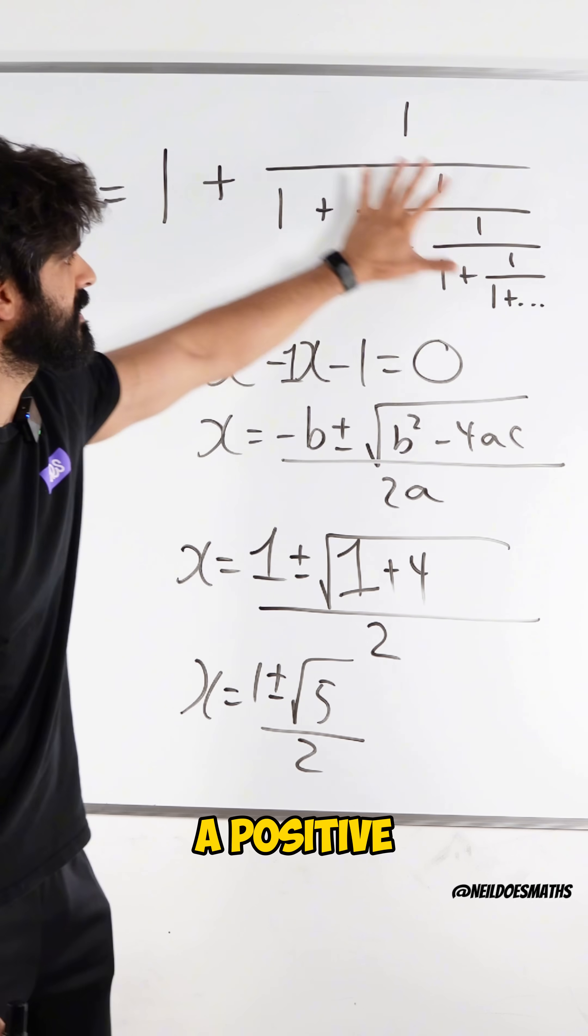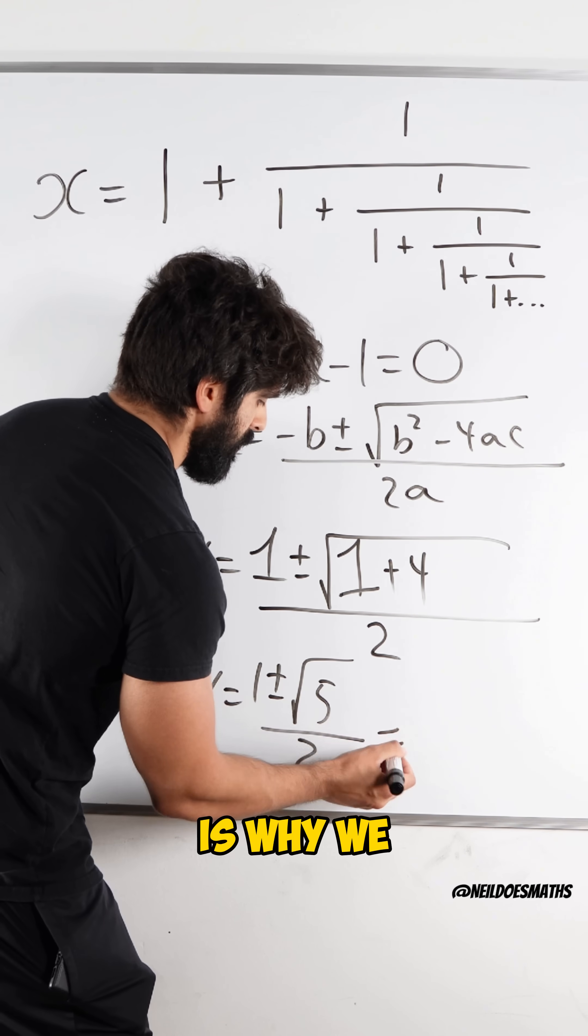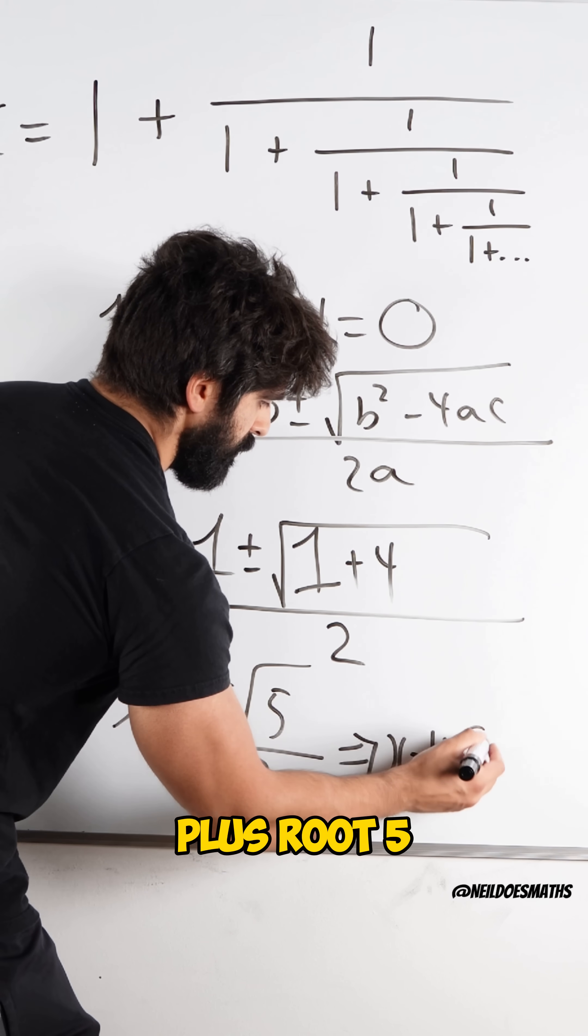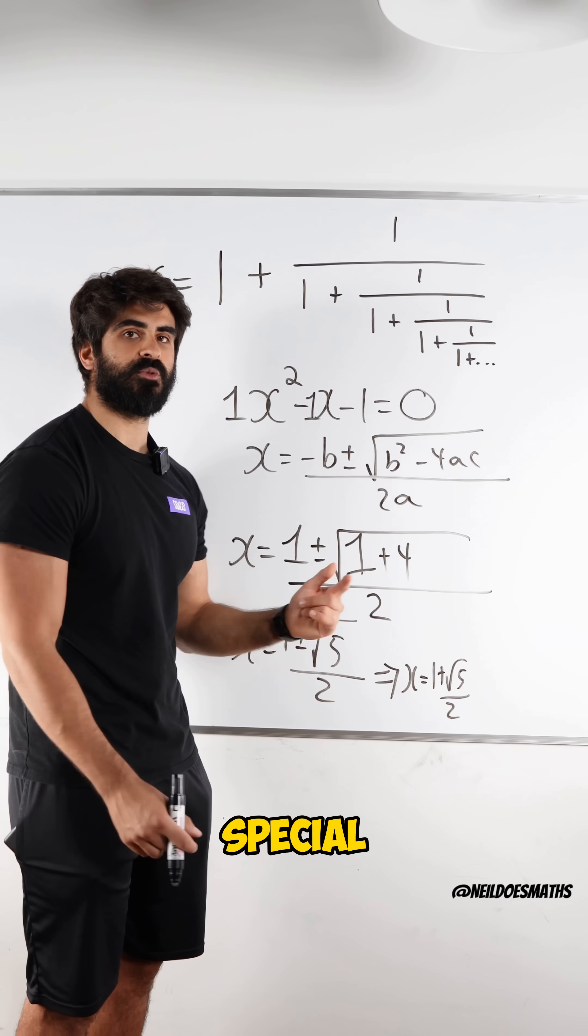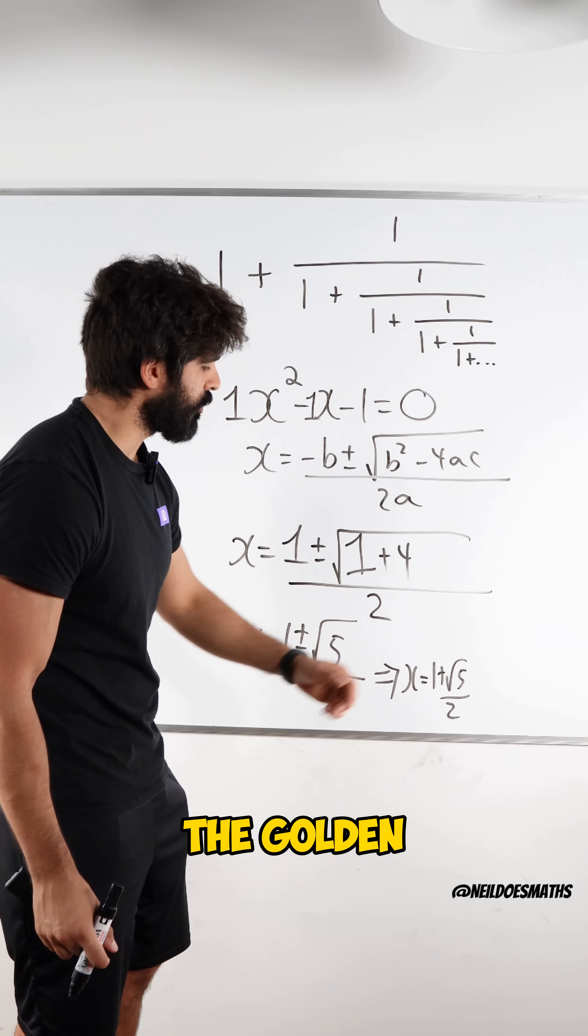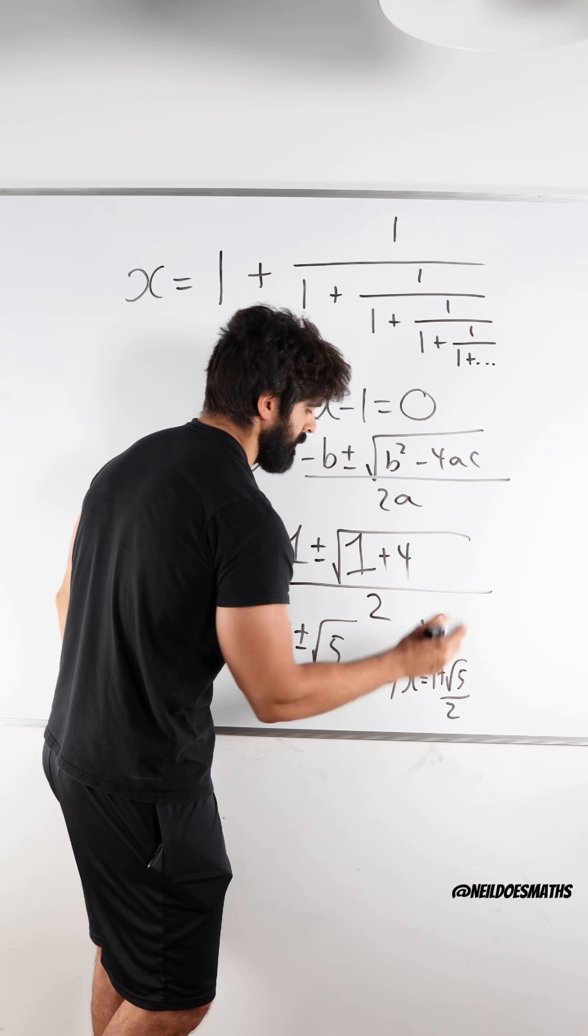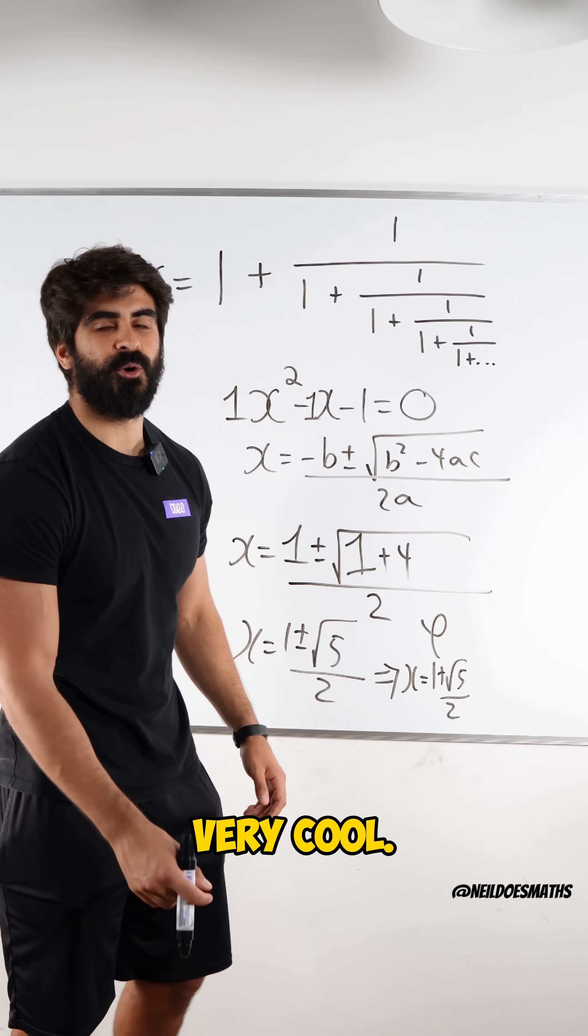Now you can see this is a positive value, which is why we actually get x is 1 plus root 5 over 2. And this is a very special number. It is actually the golden ratio, which is very cool. Nice.